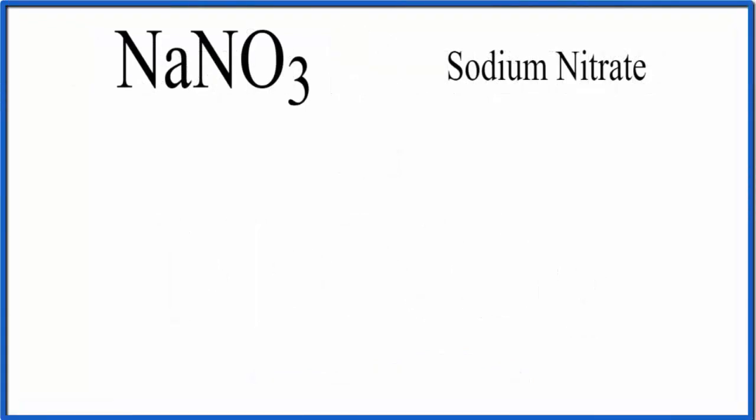We have a metal, sodium, and then we have this polyatomic ion, this nitrate ion, which is a group of nonmetals. So when you have a metal and nonmetals, that's an ionic compound, and they behave differently.